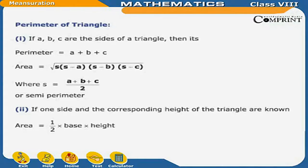Perimeter of triangle: If A, B, C are the sides of a triangle, then its perimeter is equal to A plus B plus C. Area is equal to under root of S into (S minus A) into (S minus B) into (S minus C), where S is equal to (A plus B plus C) upon 2, or semi-perimeter. If one side and the corresponding height of the triangle are known, Area is equal to half into base into height.